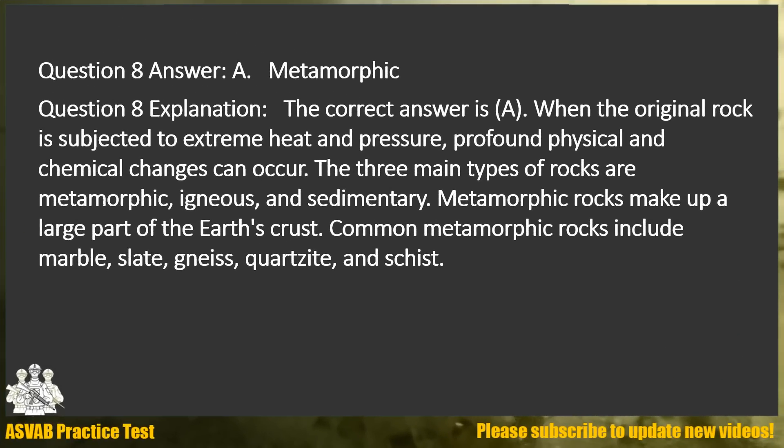Answer: A. Metamorphic. Explanation: The correct answer is A. When the original rock is subjected to extreme heat and pressure, profound physical and chemical changes can occur. The three main types of rocks are metamorphic, igneous, and sedimentary. Metamorphic rocks make up a large part of the Earth's crust. Common metamorphic rocks include marble, slate, gneiss, quartzite, and schist.